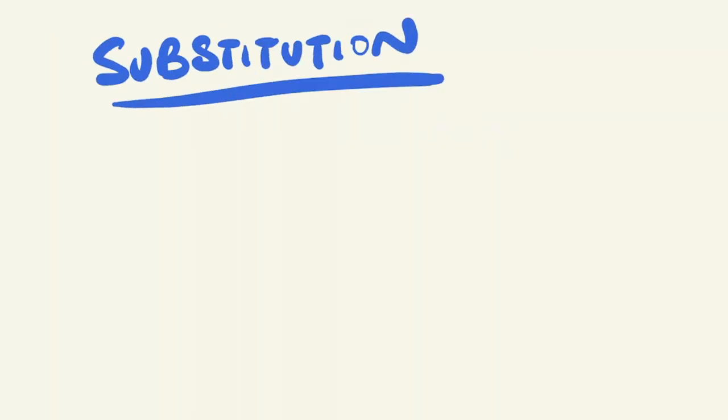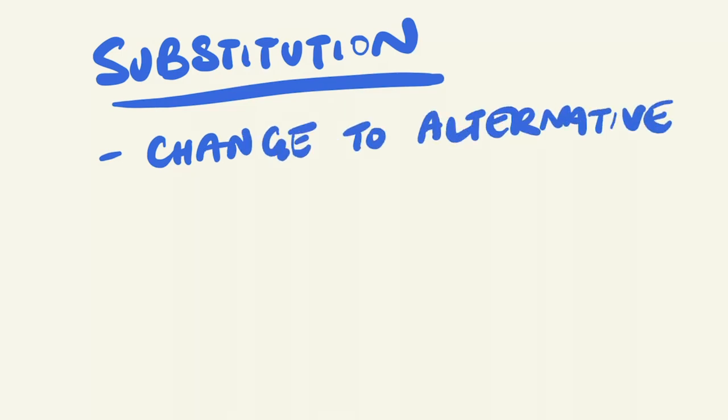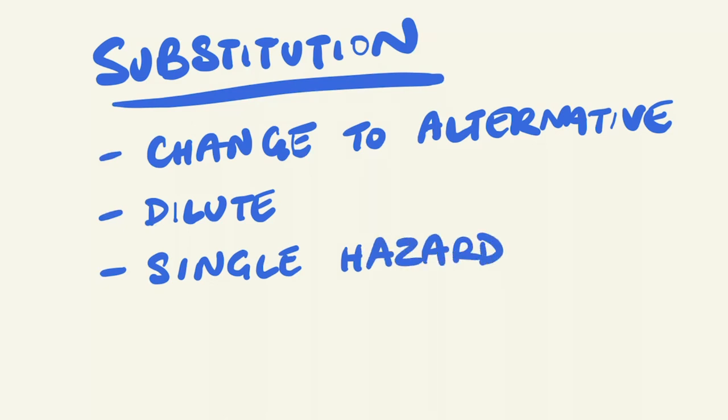Substitution. This may involve using an alternative which is less volatile, less flammable or less toxic, using diluted chemicals rather than concentrates, using chemicals that only have a single rather than multiple hazard profiles, or use products that are in solid form, such as a paste or pellet rather than dust or powder.